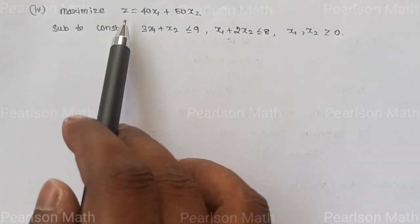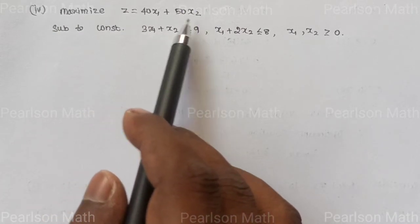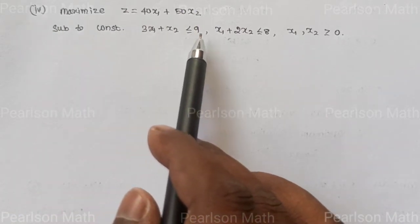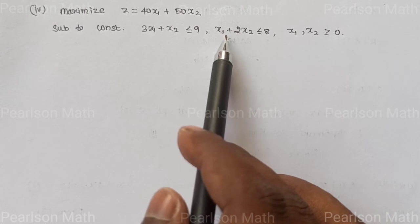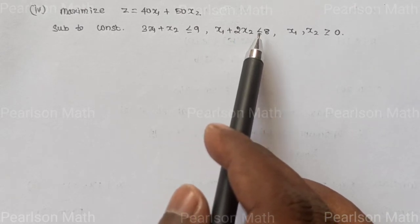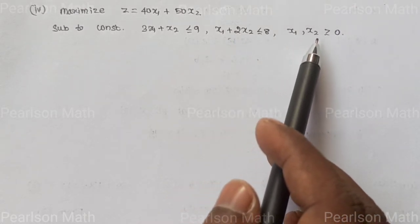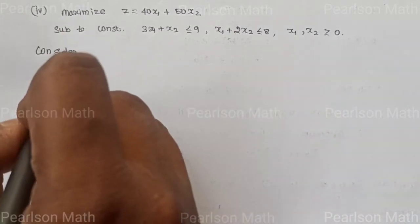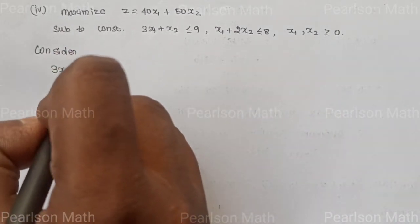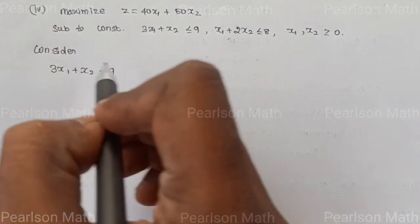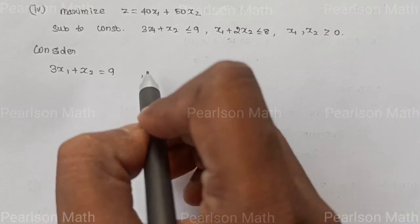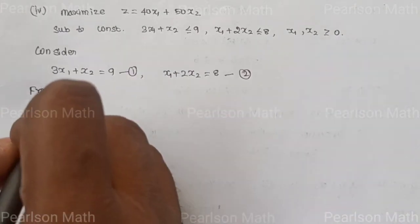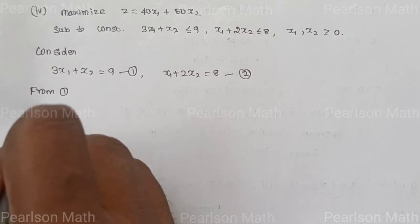Fourth subdivision: Maximize Z equal to 40x1 plus 50x2, subject to constraints: 3x1 plus x2 less than or equal to 9, x1 plus 2x2 less than or equal to 8, and x1, x2 greater or equal to 0. Converting to equations: First equation: 3x1 plus x2 equal to 9. Second equation: x1 plus 2x2 equal to 8.